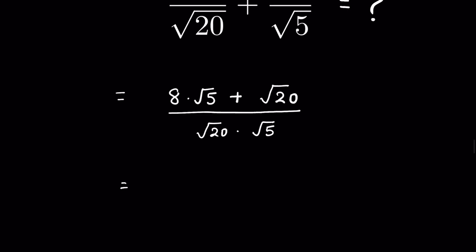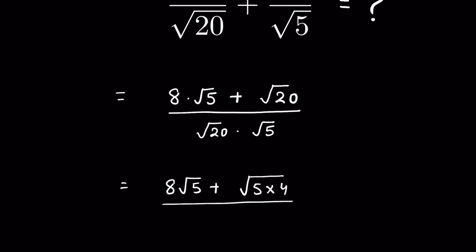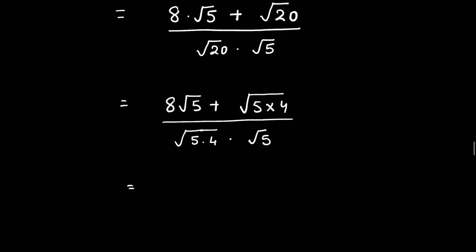We have 8 multiplied by square root of 5 plus square root of 20. We can write square root of 20 as square root of 5 times 4. In the denominator, square root of 20 is also square root of 5 times 4, multiplied by square root of 5.